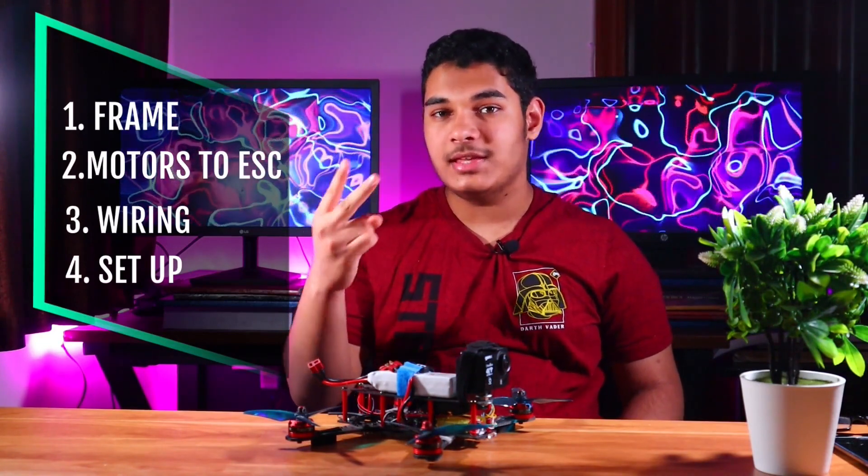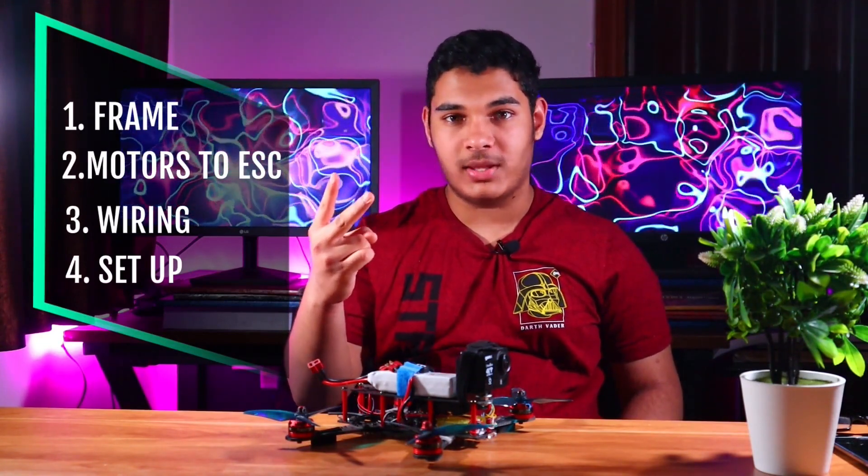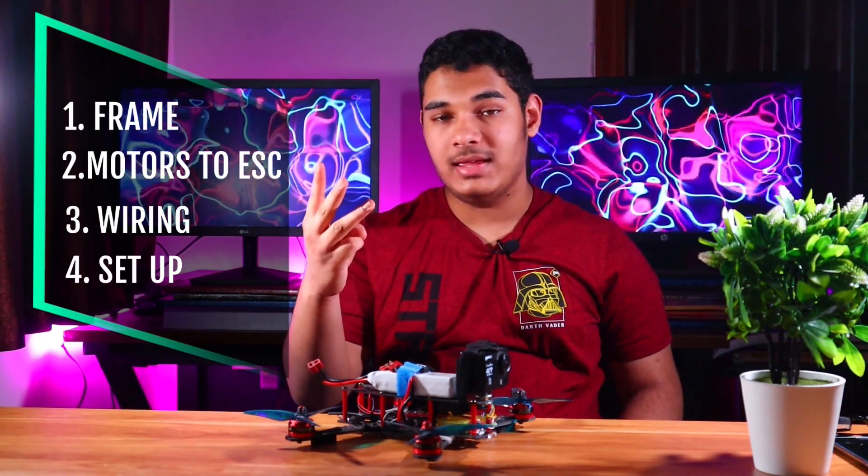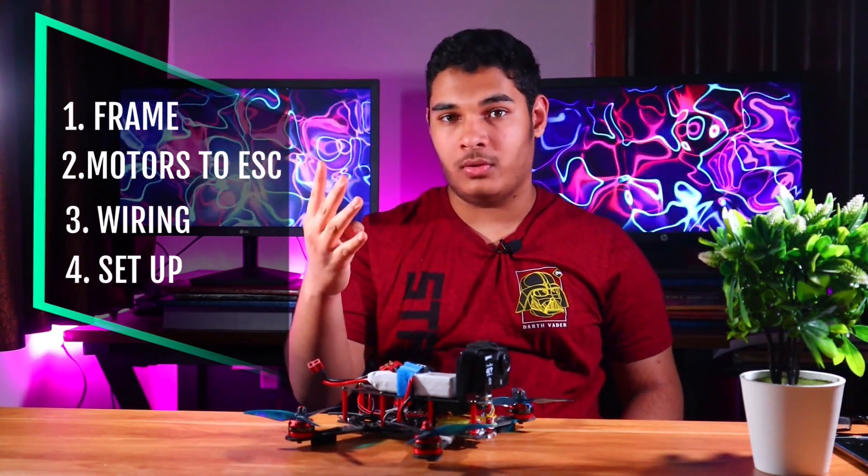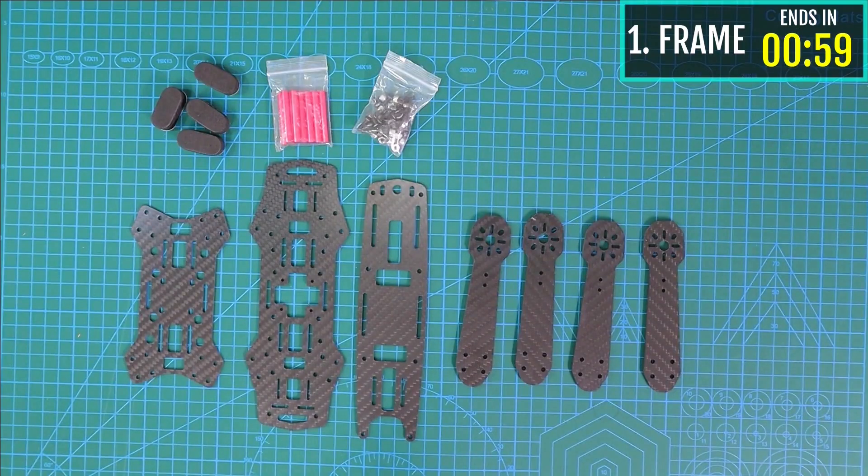First, we will make the frame. Second, we will attach the motors and solder them to ESC. Third, we will wire ESC to the CC3D and to the receiver. Fourth, we will set up our drone. So, let's first make the frame.